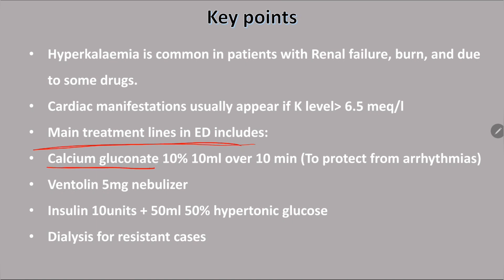To summarize, the main treatment of hyperkalemia: calcium gluconate or calcium chloride for ECG changes, then salbutamol 5 to 15 milligrams nebulized, then insulin with hypertonic glucose. If the patient is not responding, call the nephrologist for dialysis. Thank you.